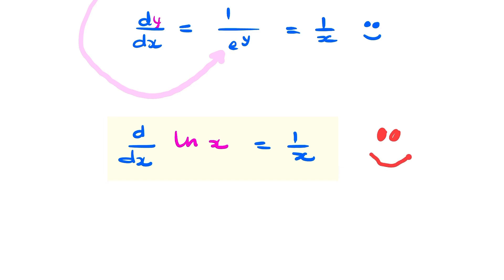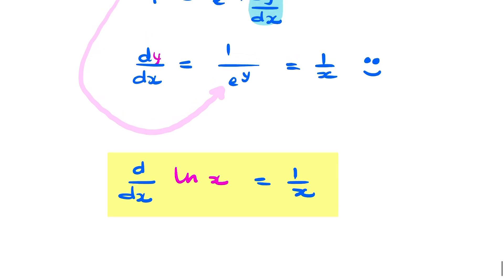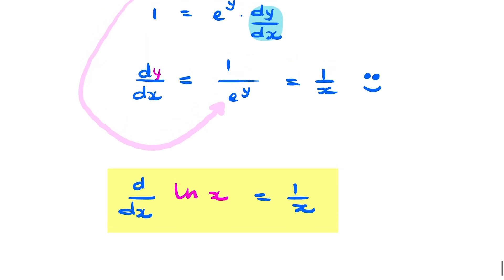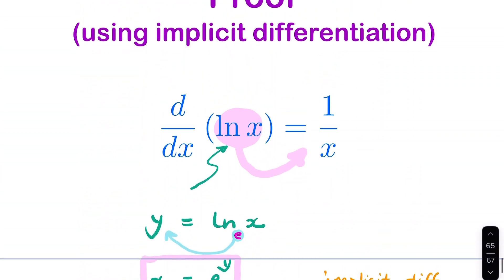So that's our final answer. We've proved that the derivative of a natural logarithm is 1 over x using implicit differentiation.